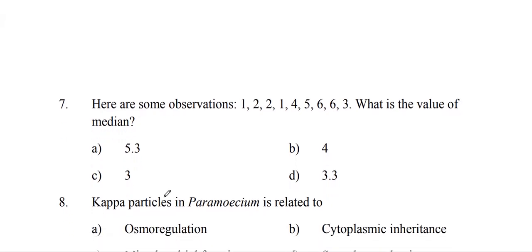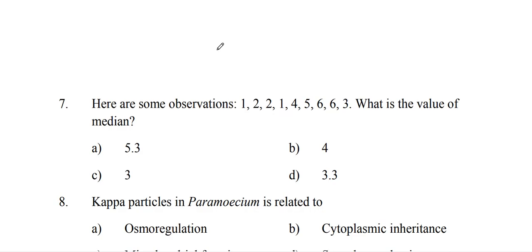This is a statistics question. Here are some observations: 1, 2, 2, 1, 4, 4, 5, 6, 6, 3. What is the value of the median? For finding the value of the median, first we have to arrange these numbers in ascending order. After arranging them, the median value or the mid value will be 3. Hence, 3 is the answer.